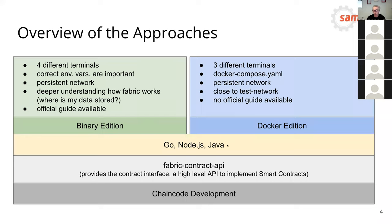The main language for chaincode is Go, but you can also use Node.js or Java. Some other languages are in beta status. We have two possibilities to write and test chaincode: the binary version, where you don't need Docker, and the Docker version, where you create a Docker Compose network with one orderer and one peer.